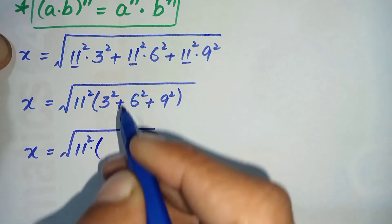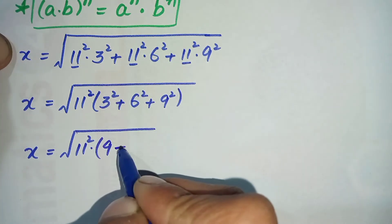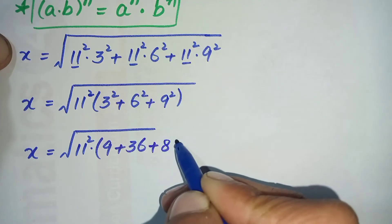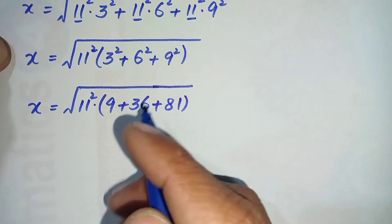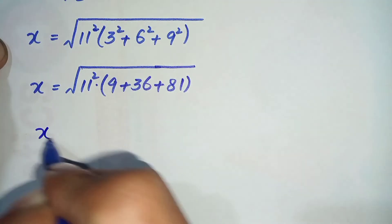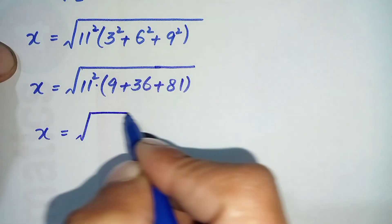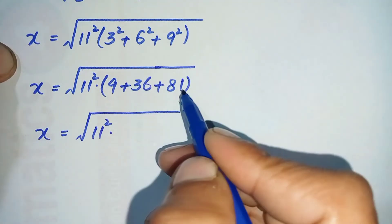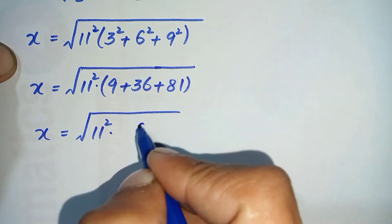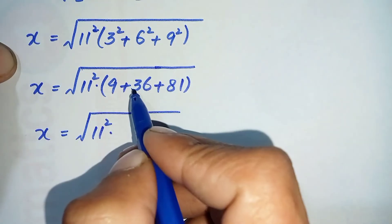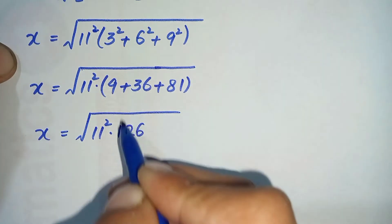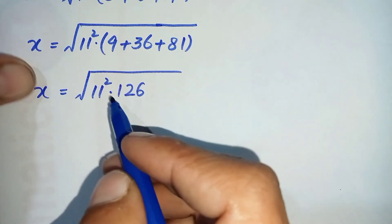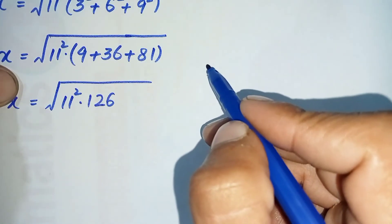Let us simplify the squares: 3 squared is 9, 6 squared is 36, and 9 squared is 81. Adding these three numbers: 9 plus 36 plus 81 equals 126. So the equation becomes x is equal to the square root of 11 squared times 126.